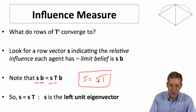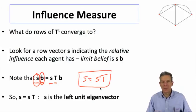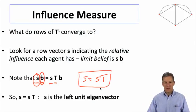That tells us that effectively, whatever this influence vector is that we're trying to get to tell us what the eventual beliefs are is going to have to be a left-hand side unit eigenvector.